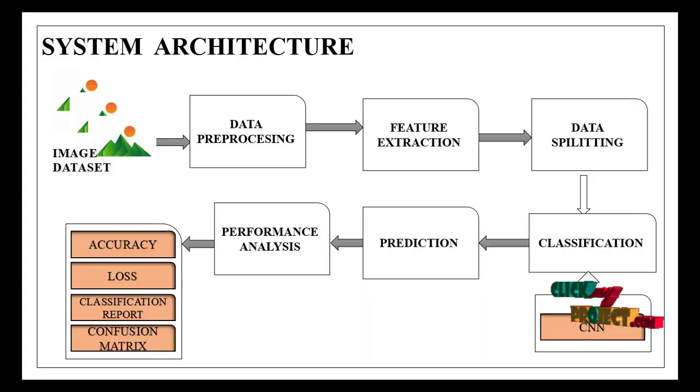This is the system architecture. Here also, this is the overall model of our system. First one is the image dataset, data preprocessing and feature extraction, data splitting. Apply the classification by the deep learning algorithm like CNN, and prediction, performance analysis.